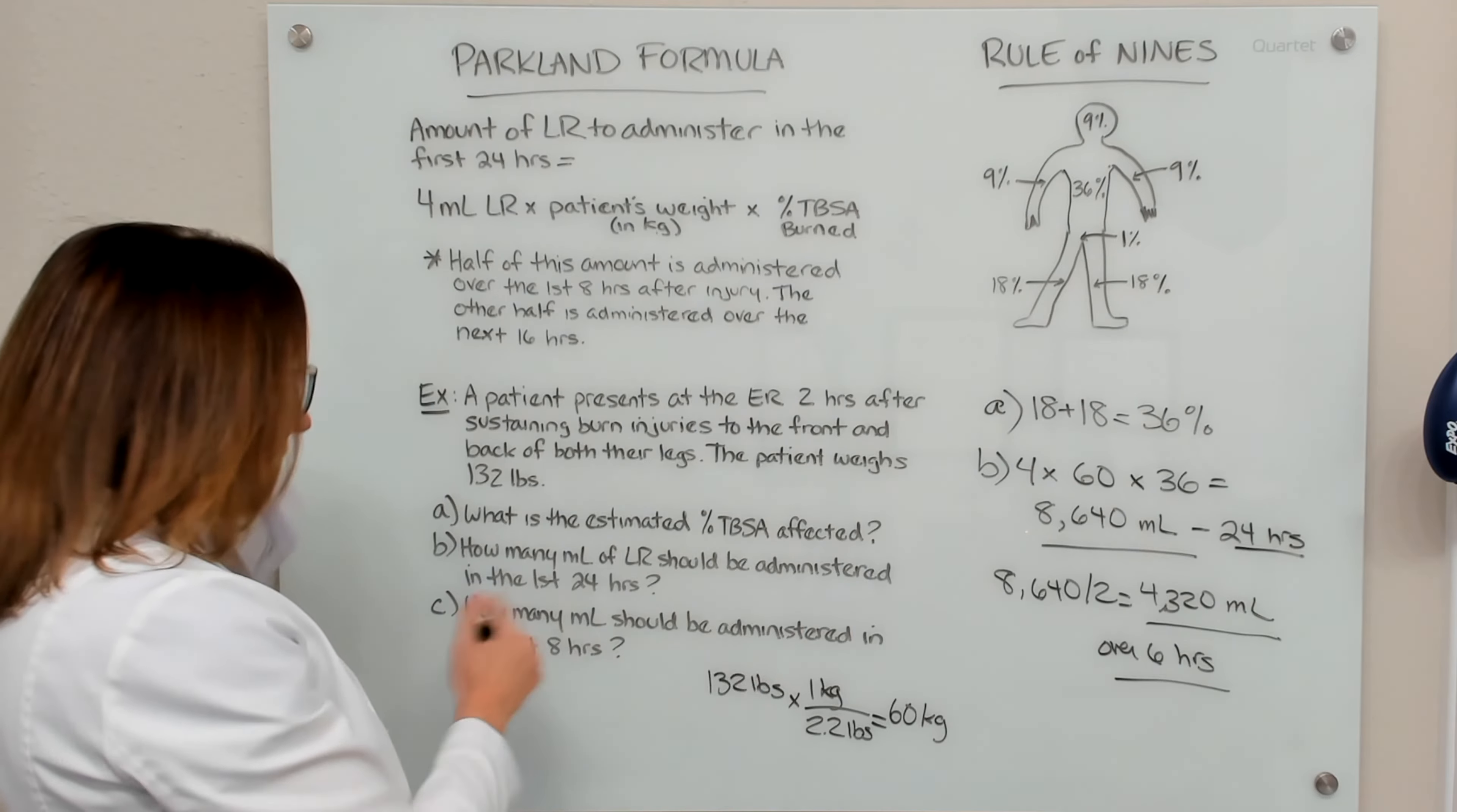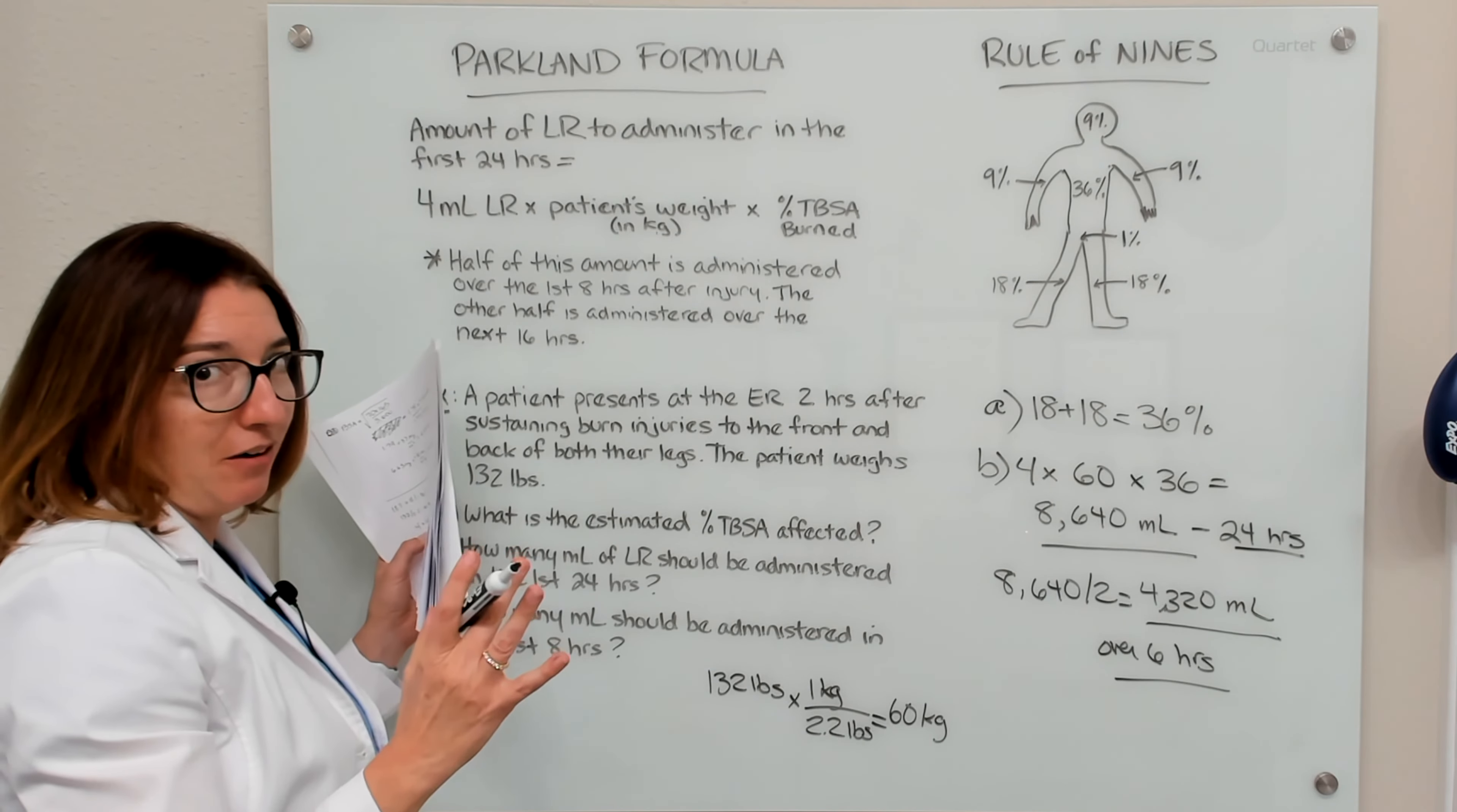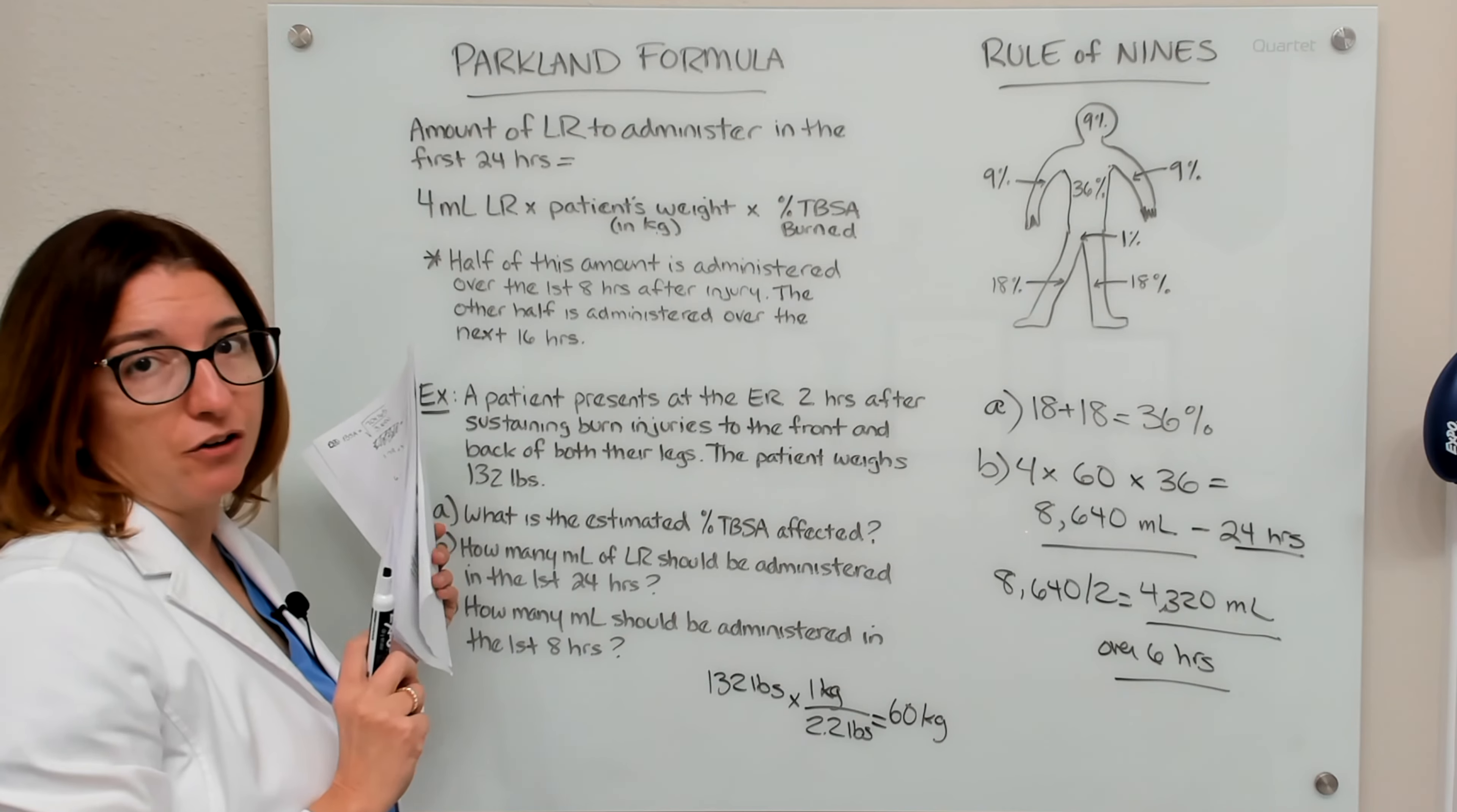So this will be administered over six hours. And that's the answer to C. So the answer to C, in the first eight hours, it's 4,320 milliliters. If you were asked the time period over which this needs to be administered to this particular patient, it would be six hours because they showed up at the ER two hours after their burn injury.